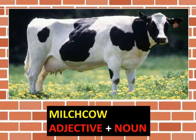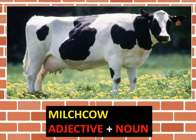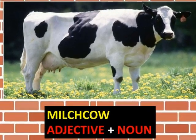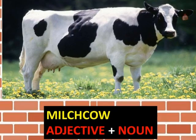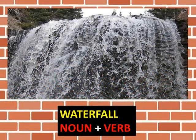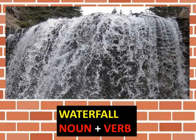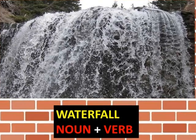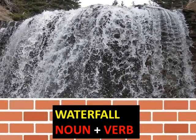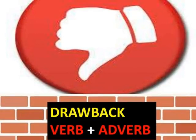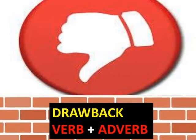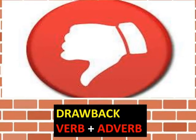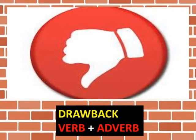'Milch cow' is a closed compound word with the structure adjective plus noun, referring to a cow kept for milking — 'passu madu alladhu karavai madu' in Tamil. 'Waterfall' is a closed compound word with the structure noun plus verb, referring to an area where water flows over a vertical drop — 'neer vilchi' in Tamil. 'Drawback' is a closed compound word with the structure verb plus adverb, referring to a disadvantage or problem — 'kurai padu' in Tamil.